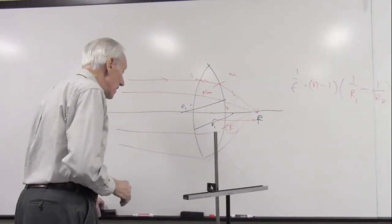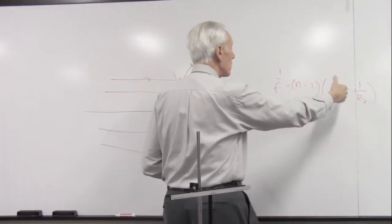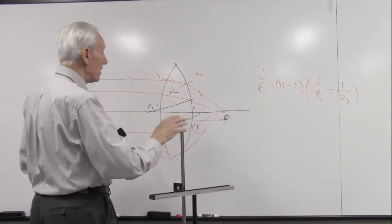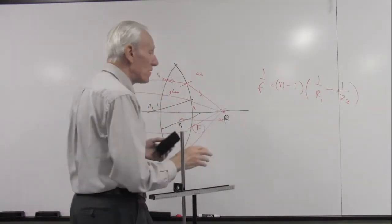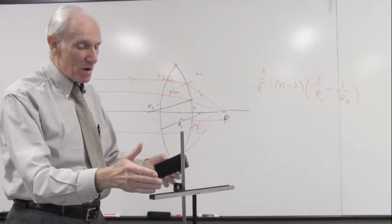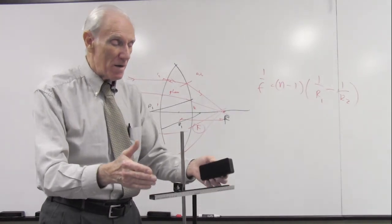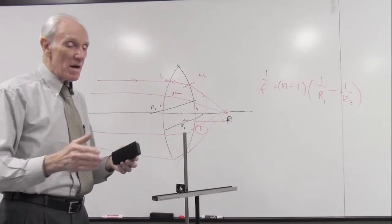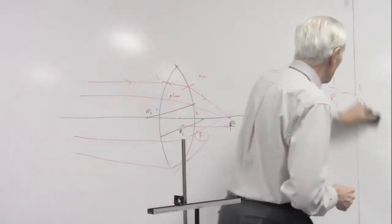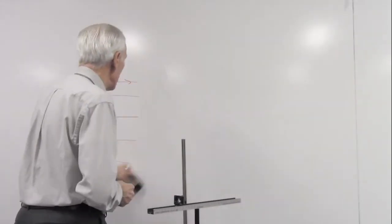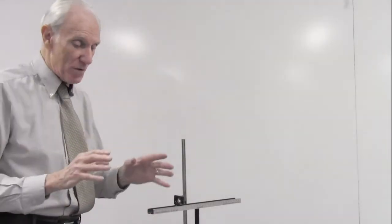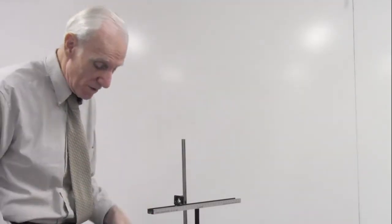Now we know the focal length and how to figure it out for a lens — it depends on the radius of curvature of the two surfaces and what the lens is made of. We're exploring the relationship between the focal length of the lens and what's called an object and an image. We're going to put an object here, form an image on the other side of the lens, measure those distances, and relate the object distance and image distance to the focal length.